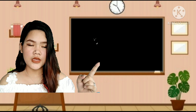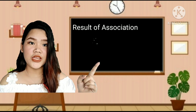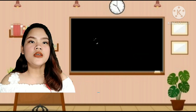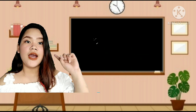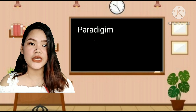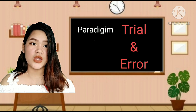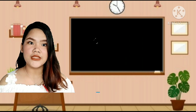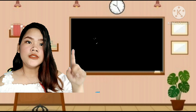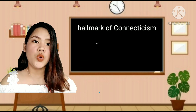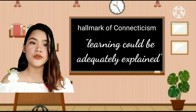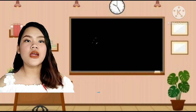Learning is the result of associations forming between stimuli and responses. Such associations, like habit, become strengthened or weakened by nature. The paradigm for SR theory was trial and error learning, in which certain responses come to dominate others due to reward. The hallmark of Connectionism was that learning could be adequately explained without referring to any unobservable internal state.